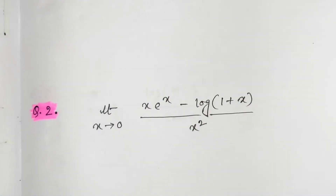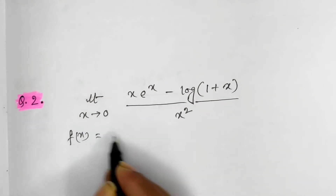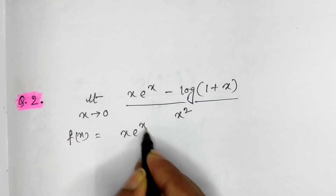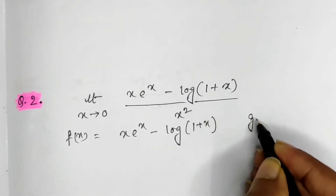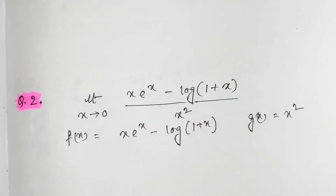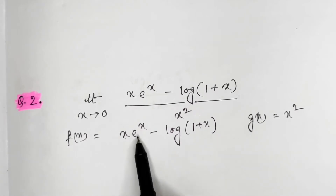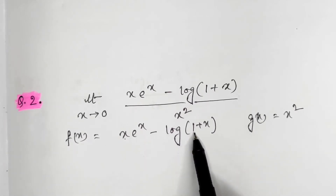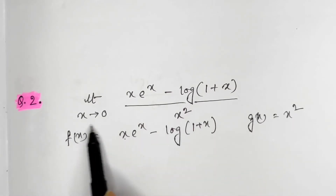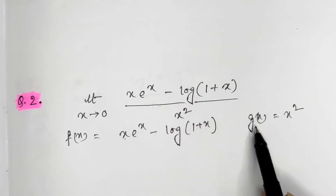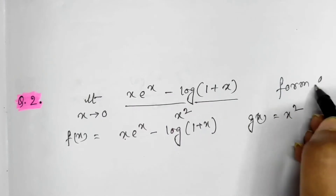Consider another function where f(x) = x·e^x − log(1+x) and g(x) = x². When x tends to 0, f(x) = 0·1 − log(1) = 0 − 0 = 0, since log(1+0) = log 1 = 0. And g(x) = 0² = 0 obviously. So this one is also in the form of 0 by 0.